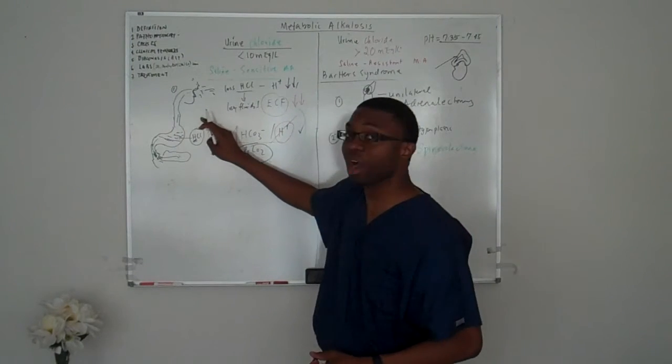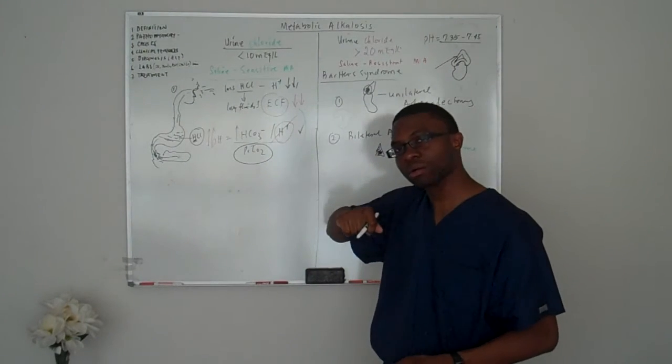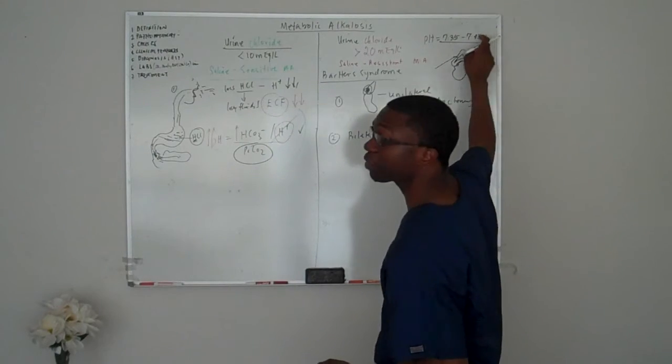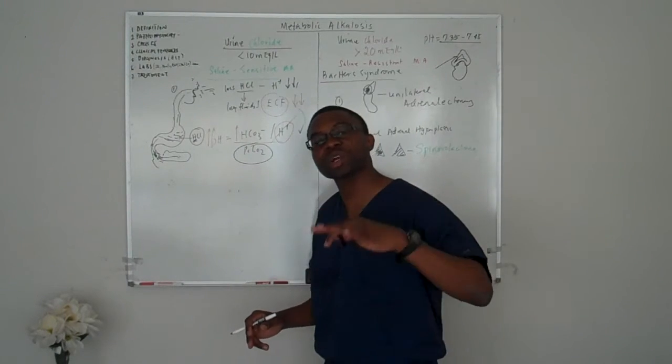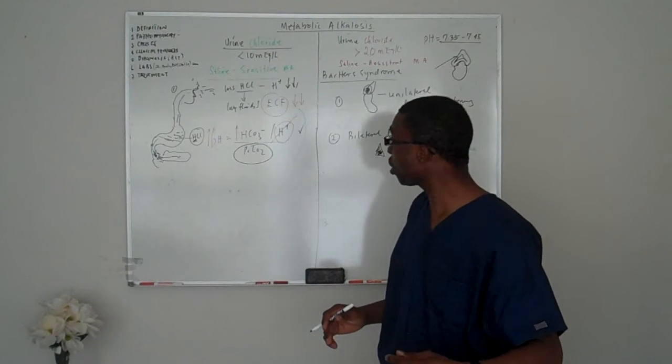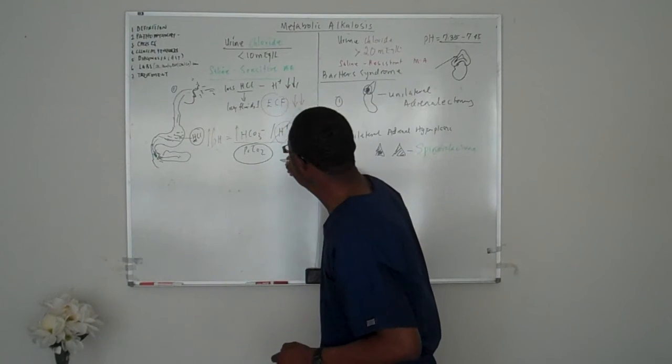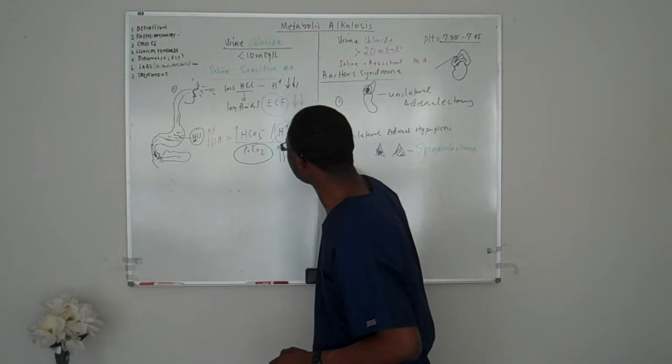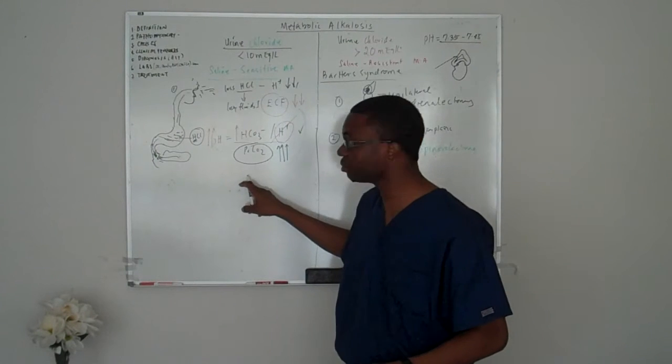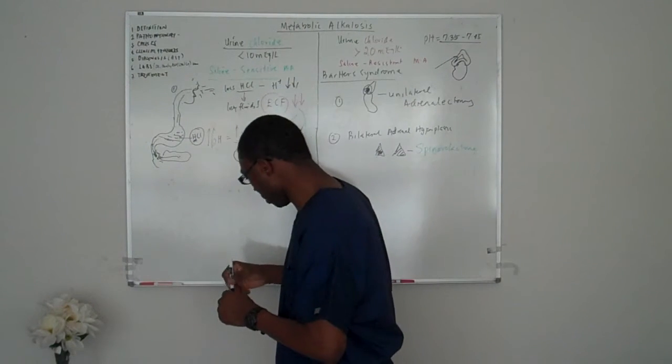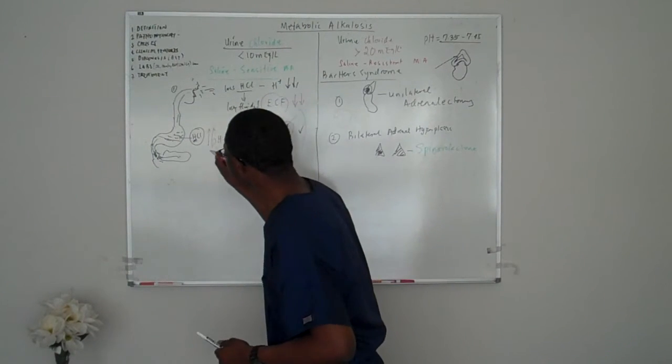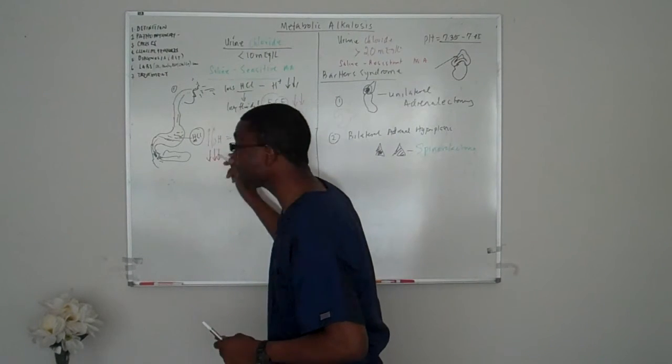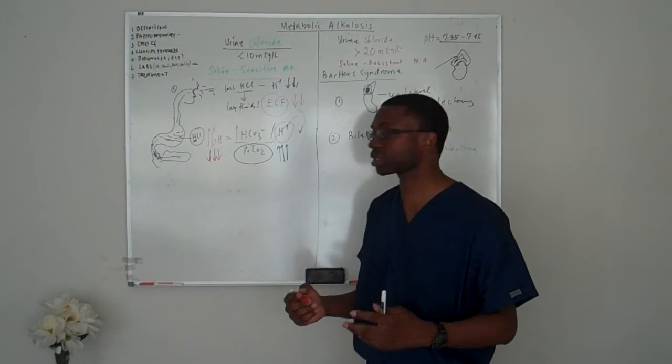Well, if the pH is up, try to bring it down. It's already greater than 7.45. So the body is trying to retain some CO2. How does it do that? If you increase the amount of CO2 at the bottom, you automatically decrease the pH. Theoretically, that's how it works, right?